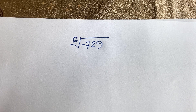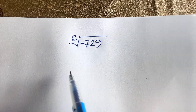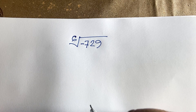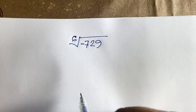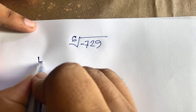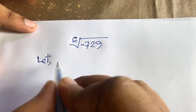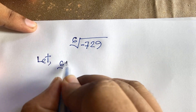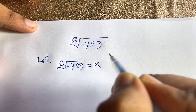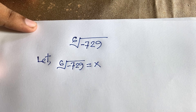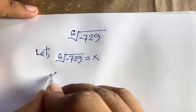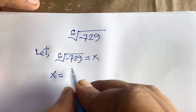Hello everyone. In this video we'll solve this interesting math question: the 6th root of minus 729 is equal to what? The answer is a complex number. Let's start by letting the 6th root of minus 729 equal x.